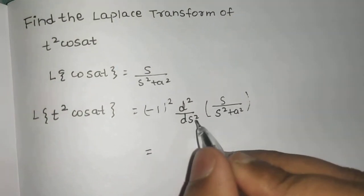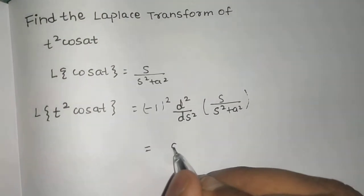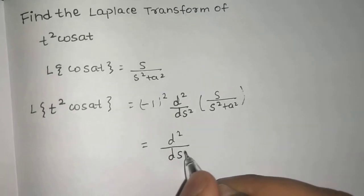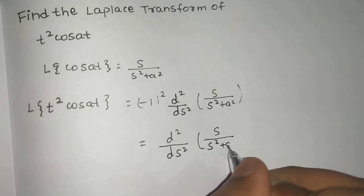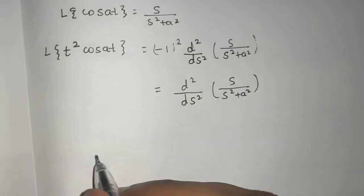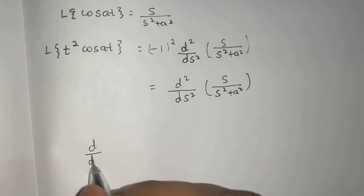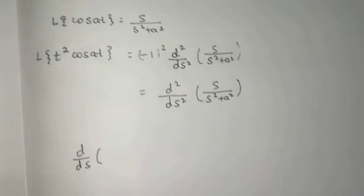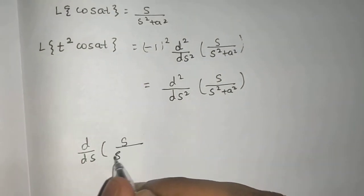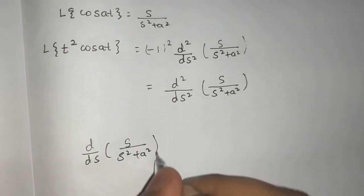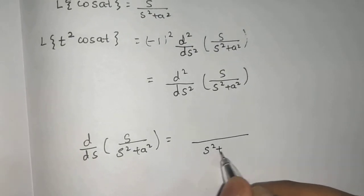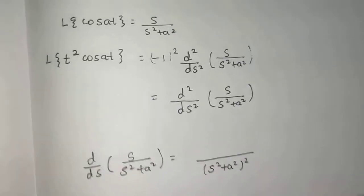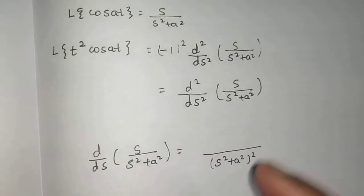Now the Laplace part ends and we are left with just the differentiation — the double derivative of s/(s²+a²). Let's find the first order derivative first: d/ds of s/(s²+a²). We will use the quotient rule, which says to square the denominator.